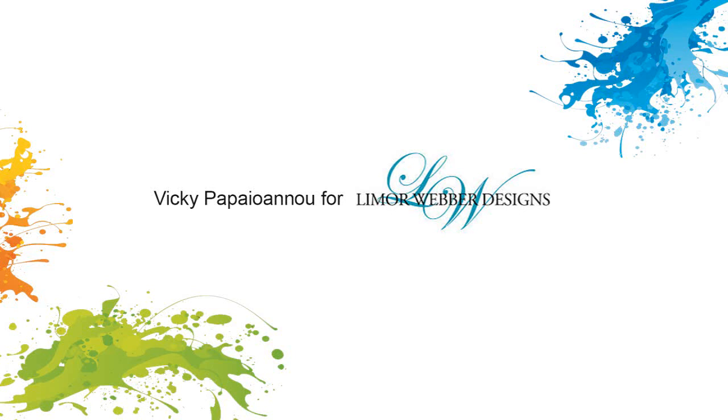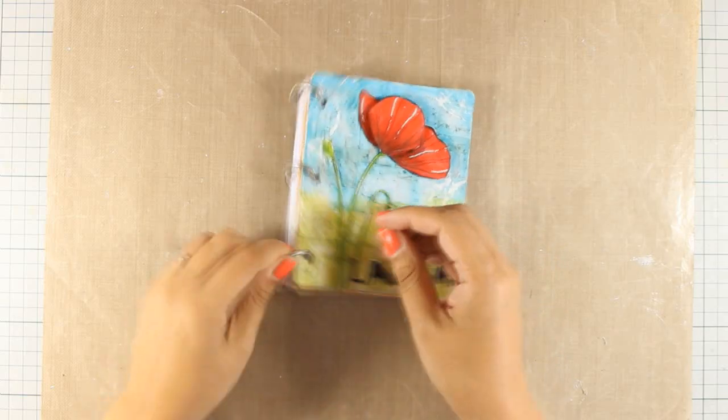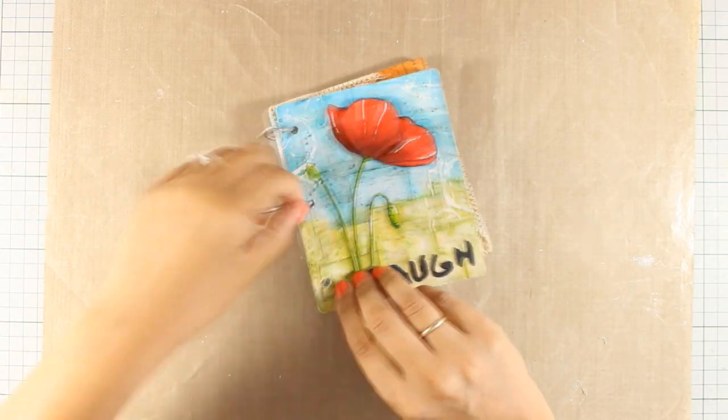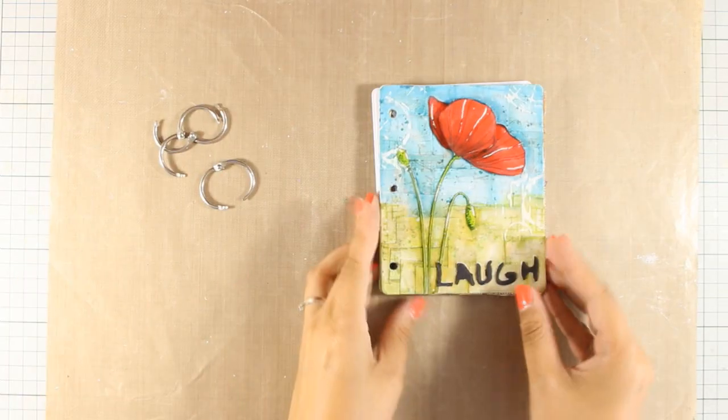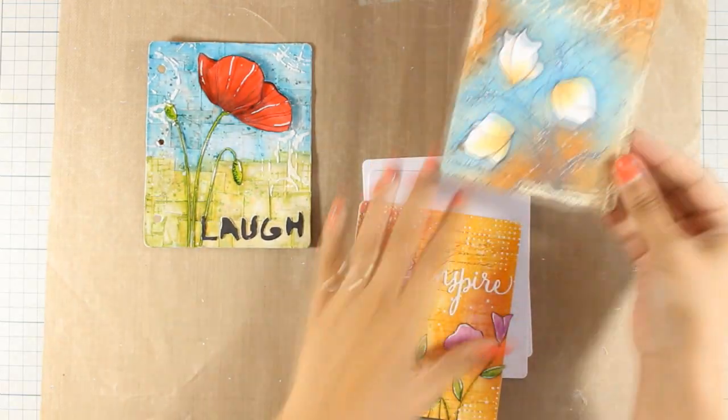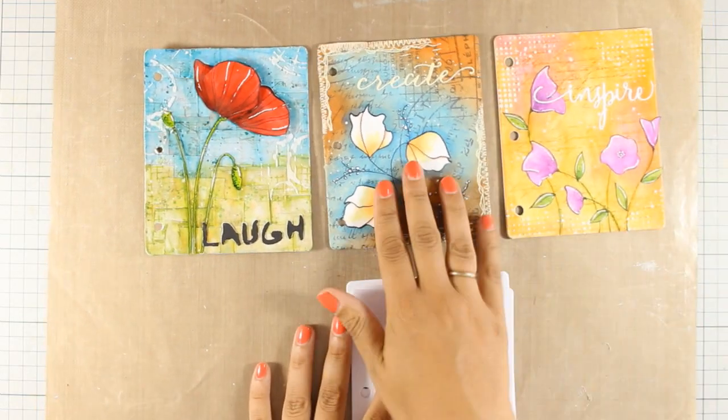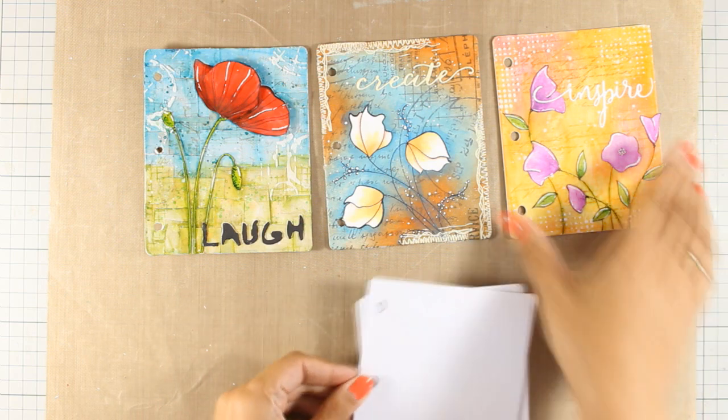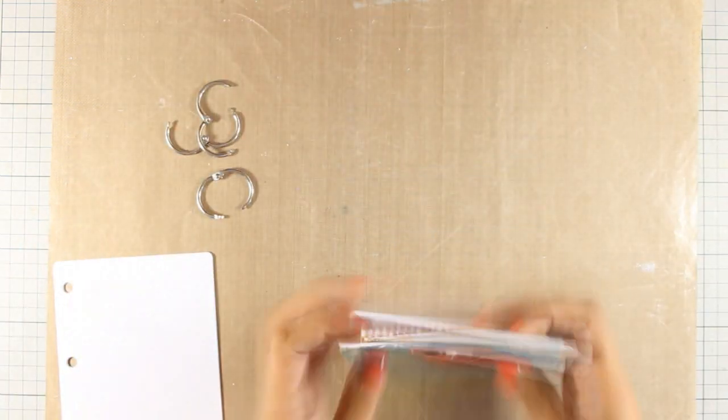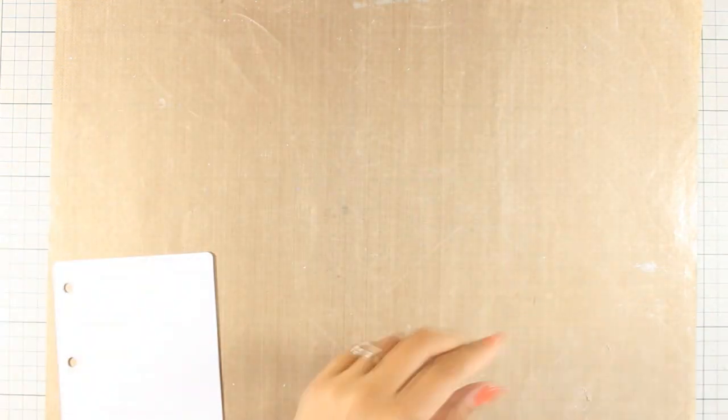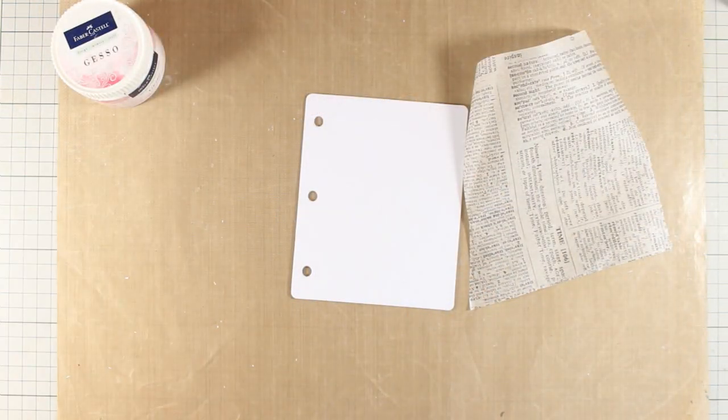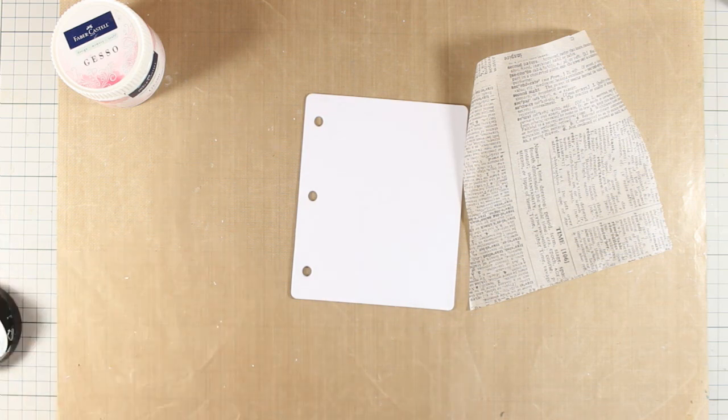Hi everyone, it's Vicky here for Limor Weber designs. Today I will be making the fourth page of my mixed media journal. This is the mini mixed media journal by Faber-Castell. It has nice and sturdy pages and I have decided to go with a flower theme for it. I have been sharing each one of the pages throughout the last months and today I am going to start on a new page.